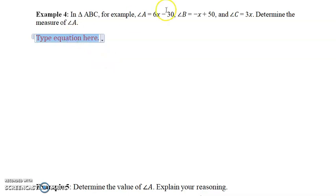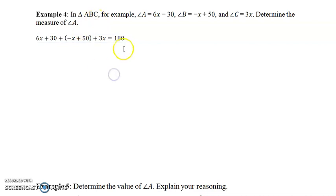So, first thing we're going to do is add these all together, because we know in a triangle the angles all added together equal 180 degrees, and we're going to set that equal to 180. We'll put the degrees in when we're done.